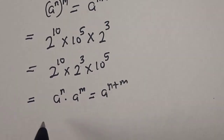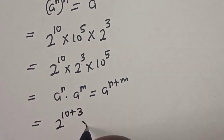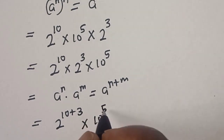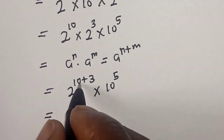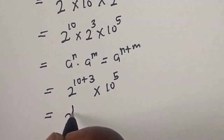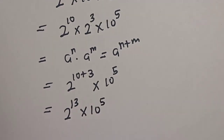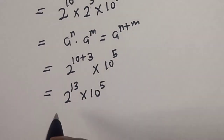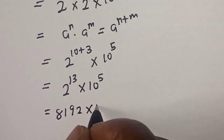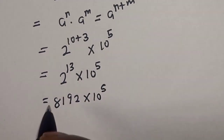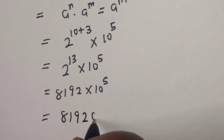Using the rule aⁿ × aᵐ = aⁿ⁺ᵐ, we add the exponents: 10 plus 3 gives us 2 raised to power 13, multiplied by 10 raised to power 5. And 2 raised to power 13 is 8192, so we have 8192 times 10 raised to power 5, giving a final answer of 819,200,000.